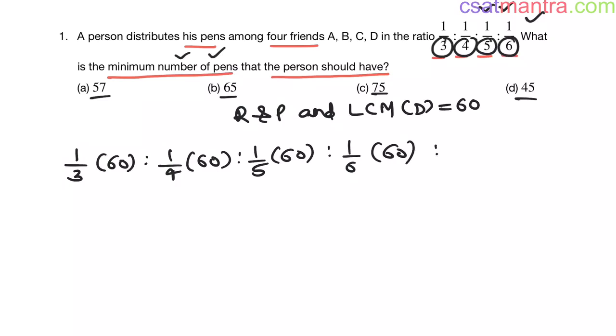1/3 times 60, 1/4 times 60, 1/5 times 60, 1/6 times 60. This equals 3 twenties are 20, 4 fifteens are 15, 5 twelves are 12, 6 tens are 10. Now if you observe these ratios, these quantities won't get cancelled further. They don't have any common factor.